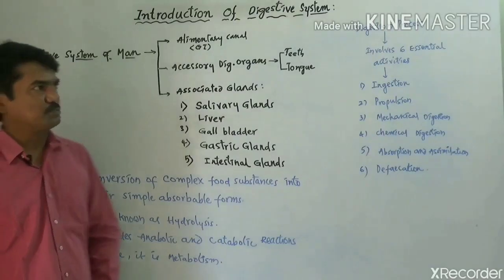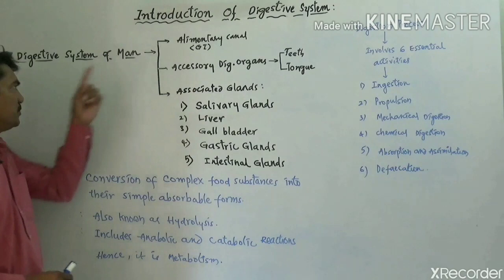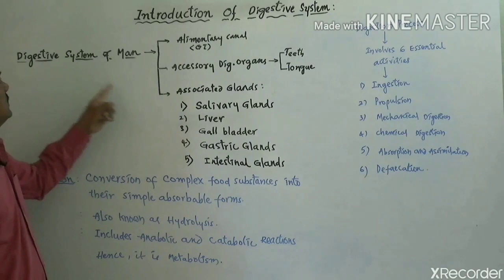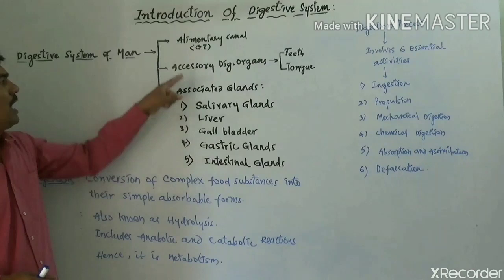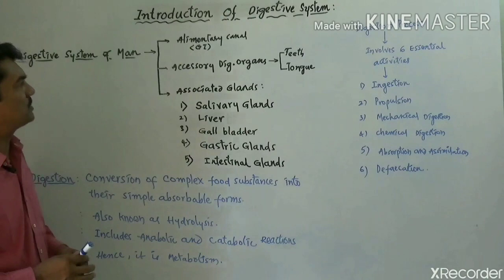The digestive system of human beings is included with various structures. The digestive system of human beings is composed with three main structures: the alimentary canal, accessory digestive organs, and associated glands. These are the main three structures present in the total digestive system of human beings.